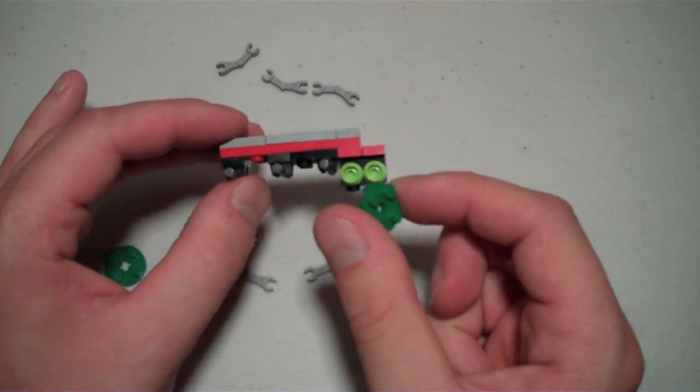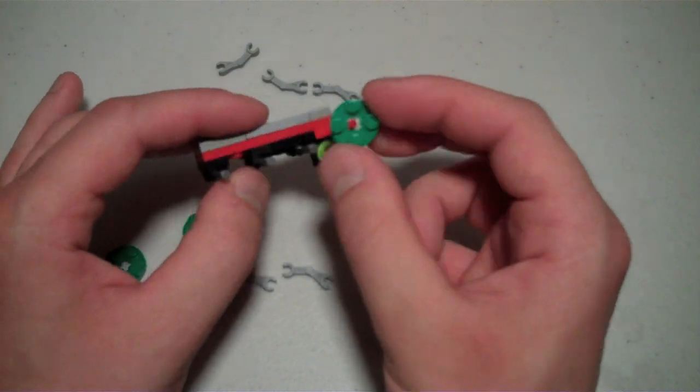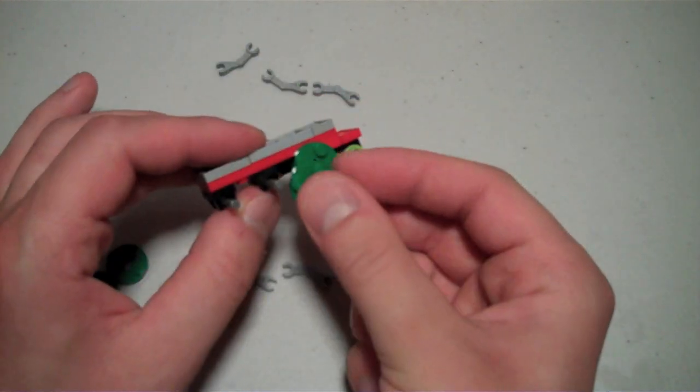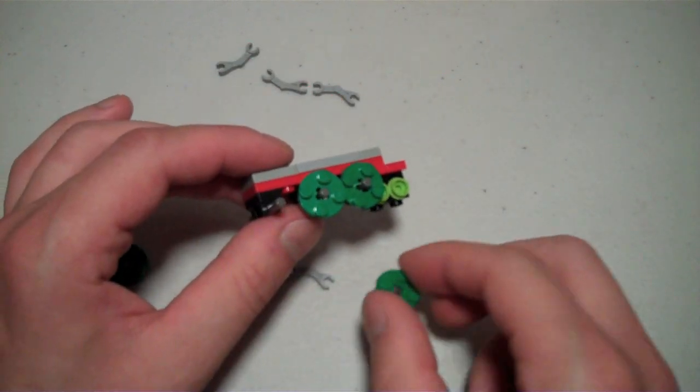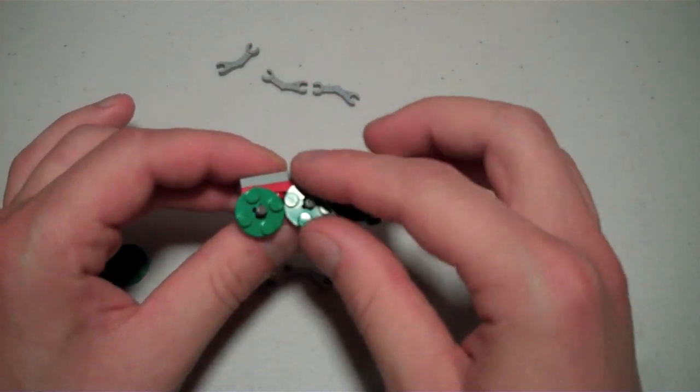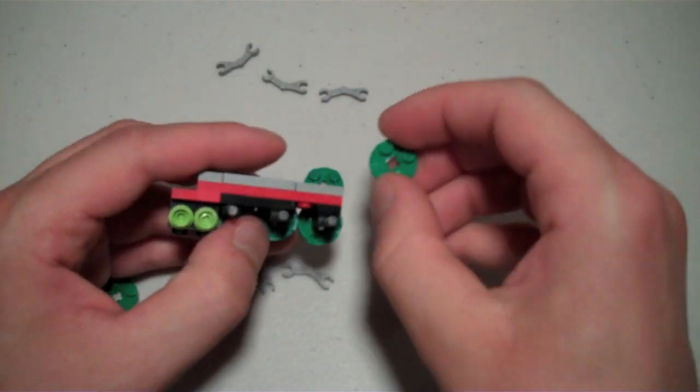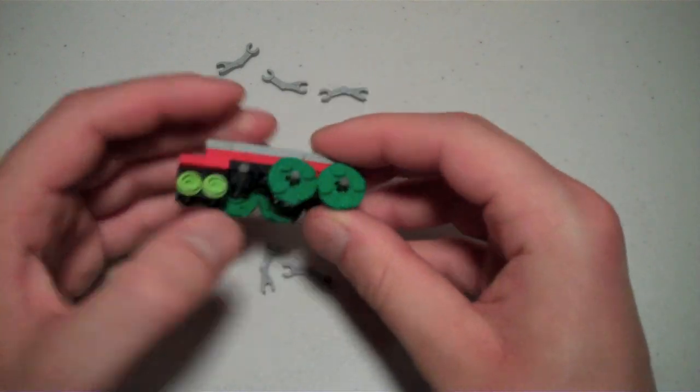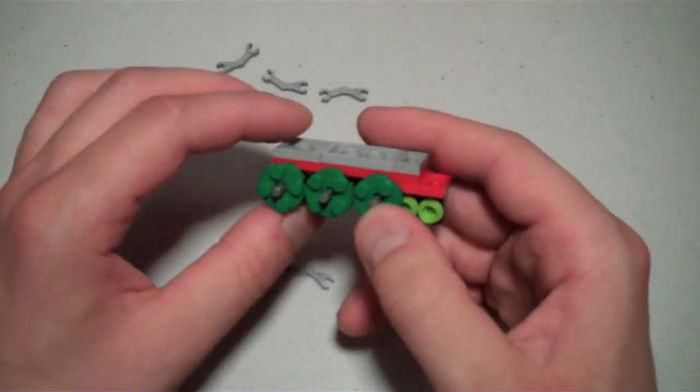Again, I would prefer if I had lime green, like this color. I would use that color. So, we're going to attach one wheel here. And another. And another. And guess what? We're going to turn it over, and we're going to do three more wheels. One. Two. Three.